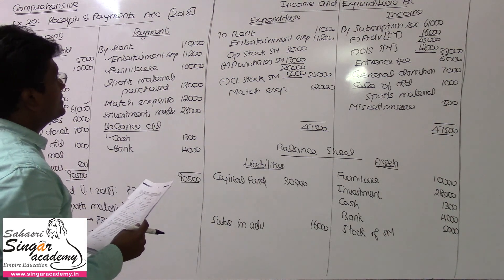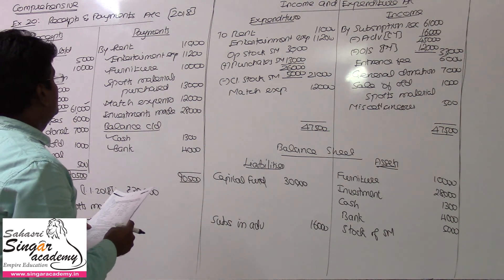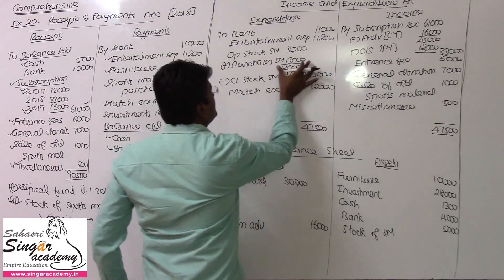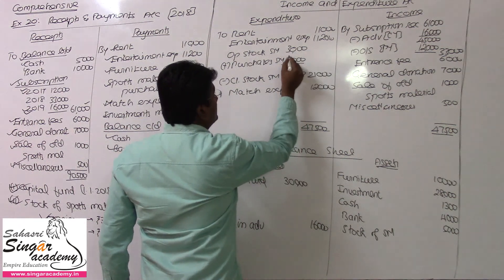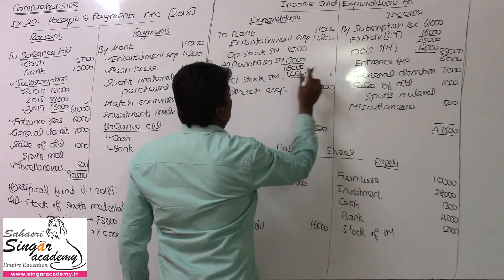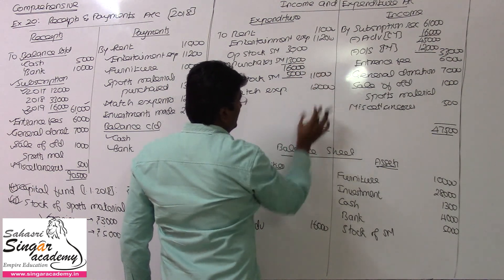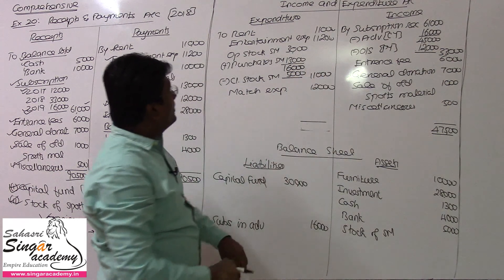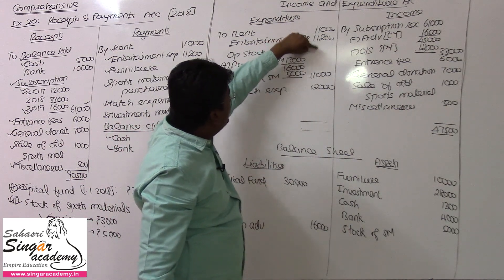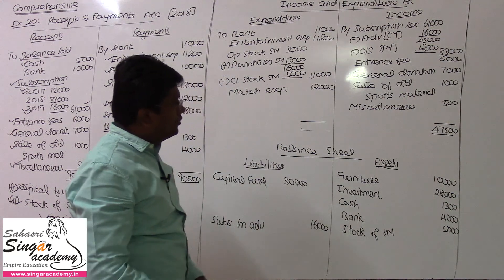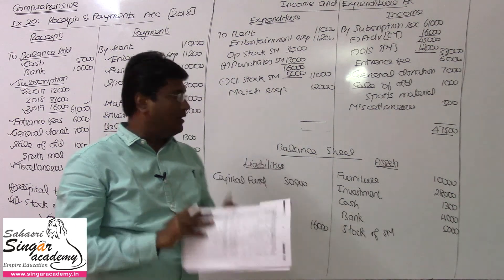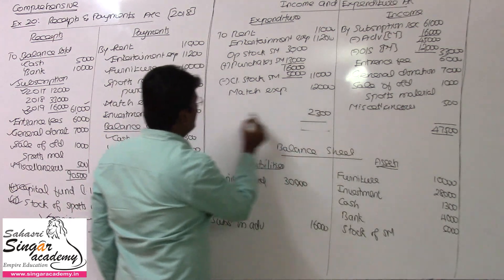Rent, entertainment expenses, match expenses — rechecking. I made a mistake: 13 plus 3 plus 13 = 16,000 minus 5,000 = 11,000. Then minus 5,000 and 11,000. Recalculating: the total is 45,200 on the expenditure side. So, 2,300 surplus. Let me check — of course, the answer is correct: 2,300 is the surplus.